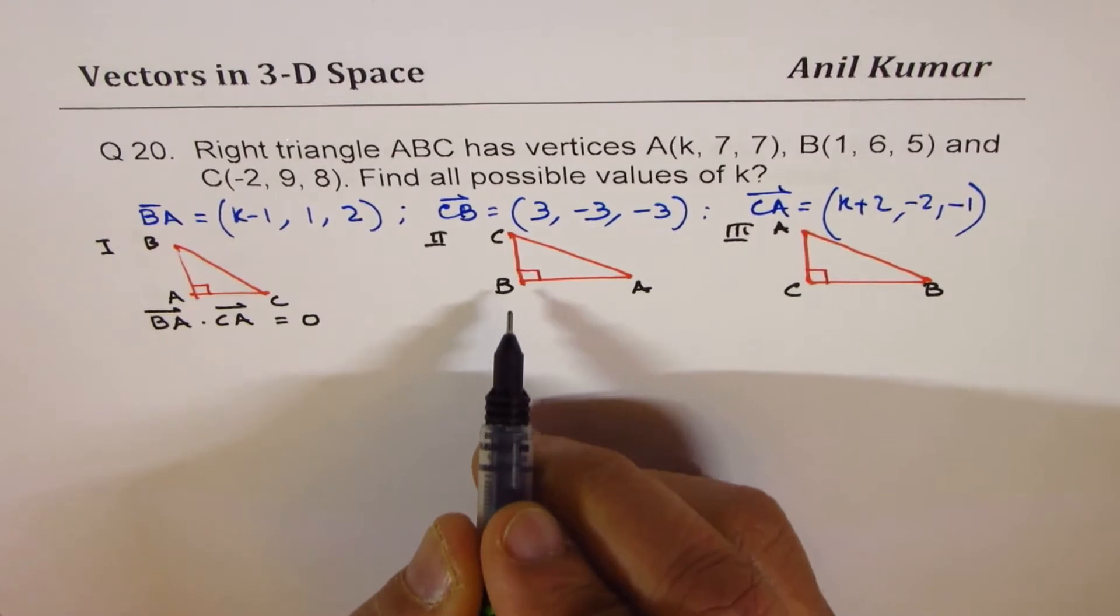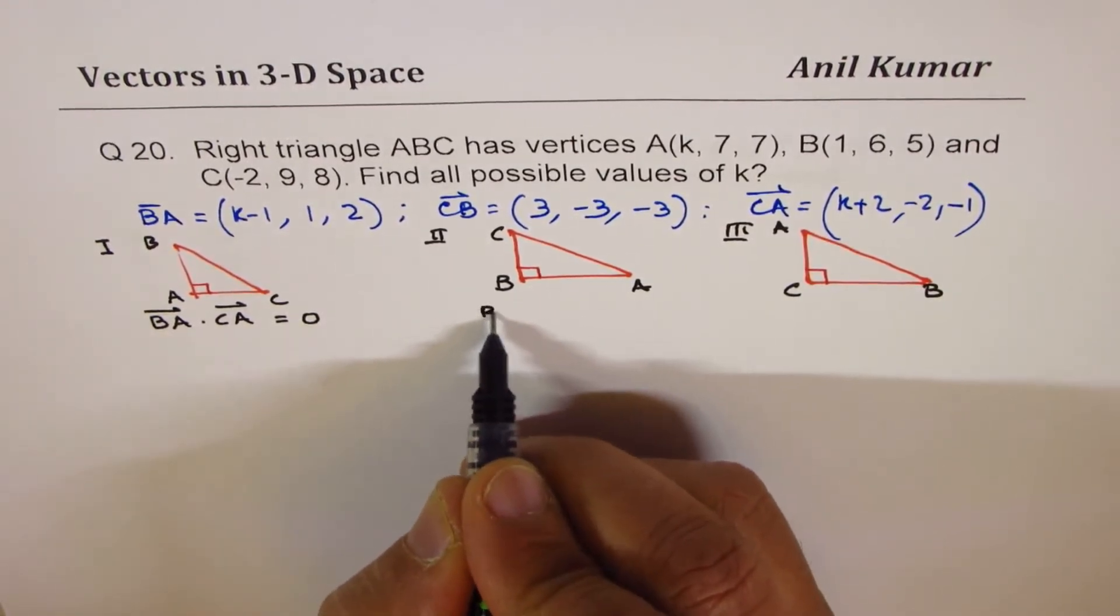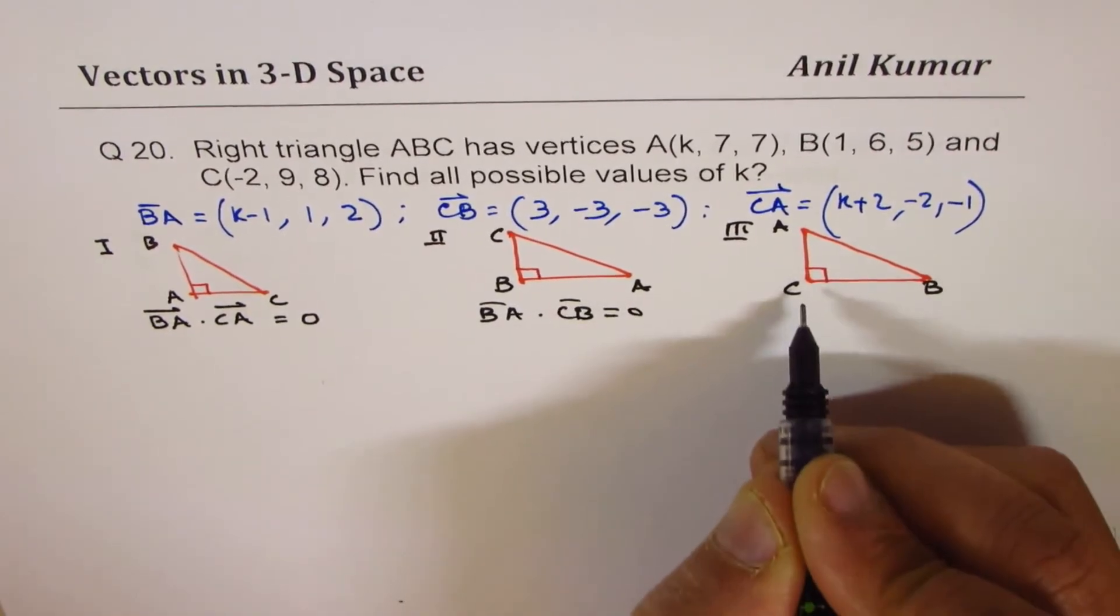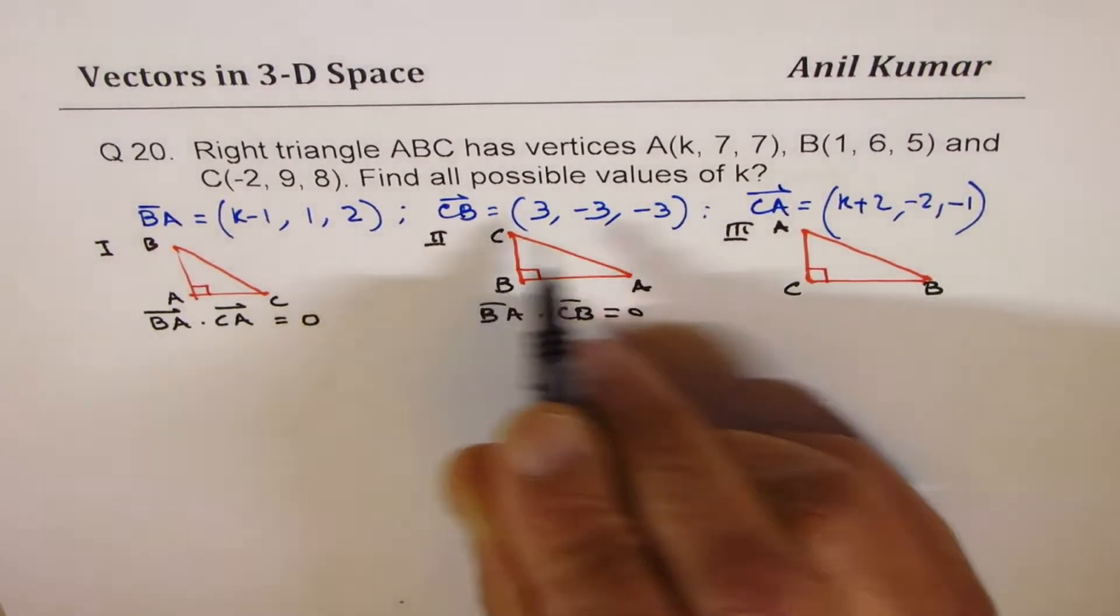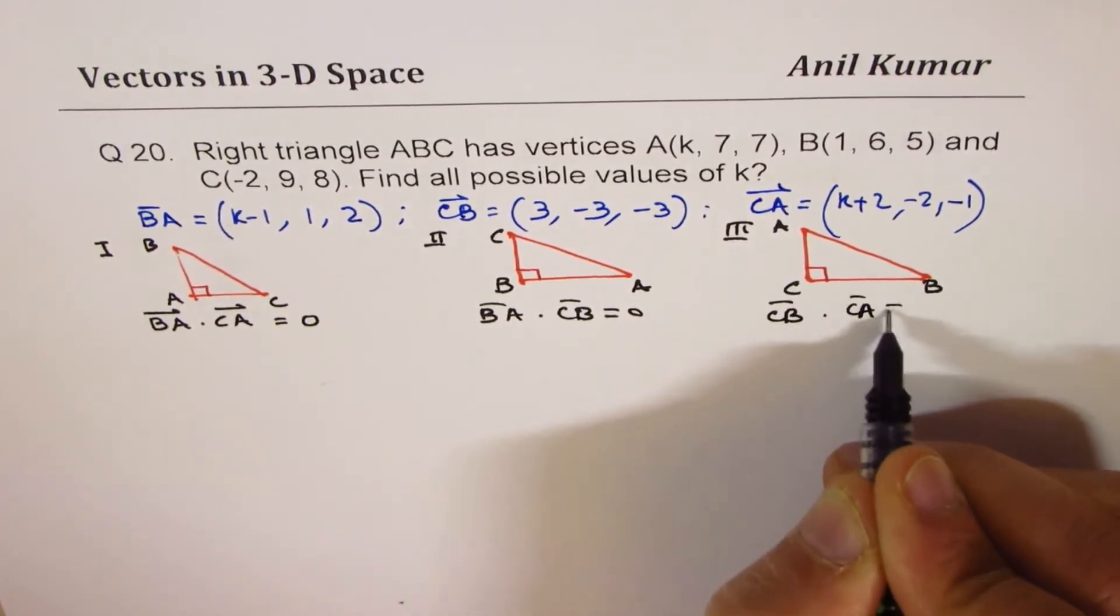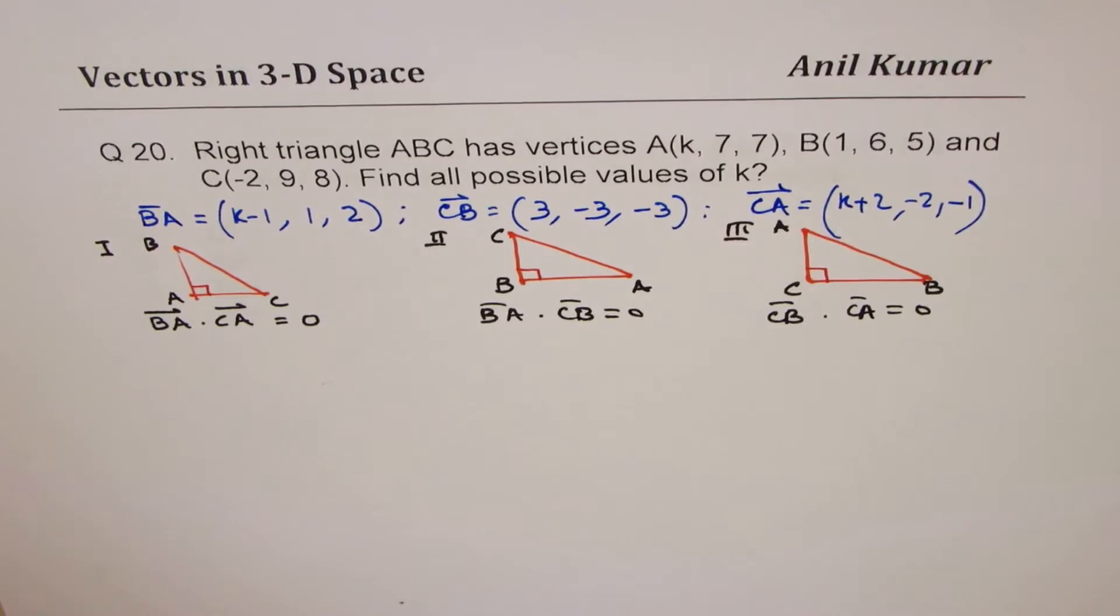Here B is right there at the right angles, so we say BA dot CB equals to 0. Here C is there, so C is common to these two. CB dot CA equals to 0. So these are three different scenarios.